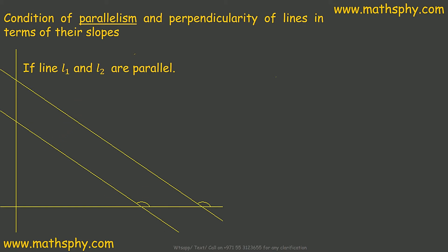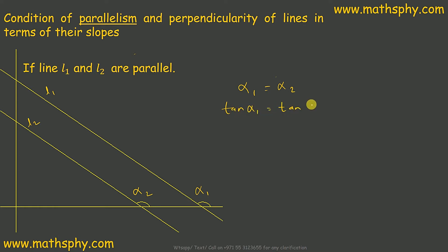We have these two lines — let's take them as L1 and L2. This is alpha 2 and this is alpha 1. Slope of line 1 is alpha 1, slope of line 2 is alpha 2. Now if L1 and L2 are parallel, then alpha 1 will be equal to alpha 2, which means tan(alpha 1) equals tan(alpha 2), which means m1 equals m2. So when two lines are parallel, their slopes are equal.